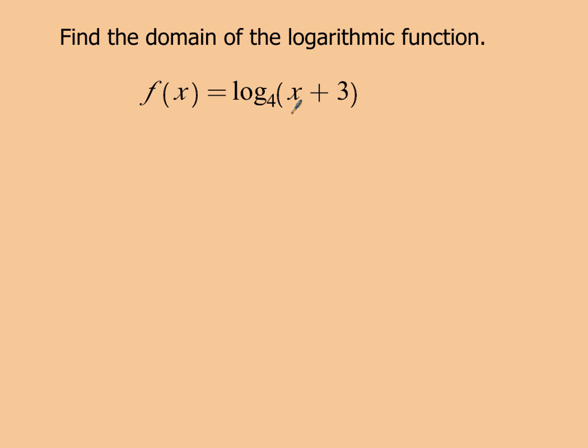Now this piece right here, this x plus 3, a lot of times in some textbooks they'll refer to that as the argument. And the argument has got to be greater than 0, it's got to be positive. So all you're going to do for this is just take x plus 3, set it greater than 0, and when you solve that, you end up with x has to be greater than negative 3, which means your domain is going to be all real numbers, such that negative 3 would go here and then infinity would go there. So that's going to be the domain for this particular logarithmic function.